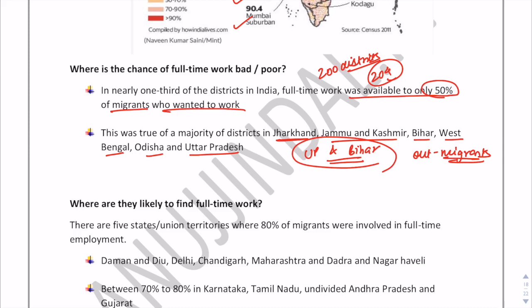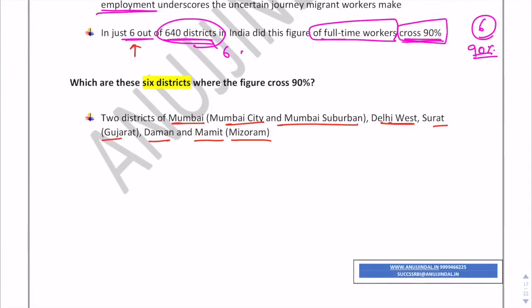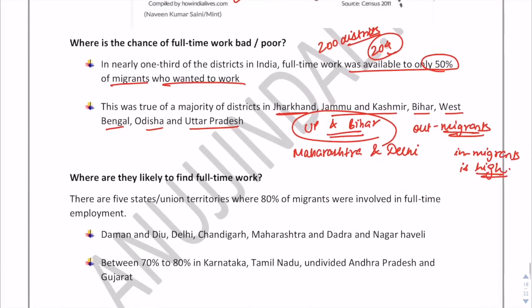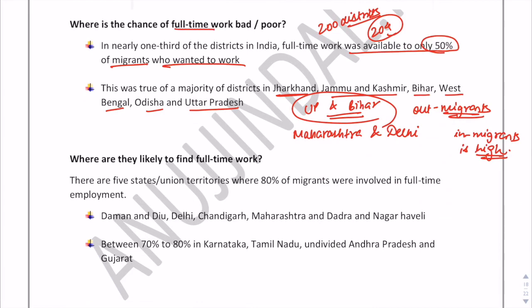We know that UP and Bihar are states where the out-migrants proportion is really high, and from the earlier discussion we can say that Maharashtra and Delhi have a very high ratio of in-migrants. To summarize: the states that attract many migrants are Maharashtra and Delhi, while the states where only 50% of migrants get work — meaning the situation is pathetic — are UP and Bihar, which have high out-migrant proportions.